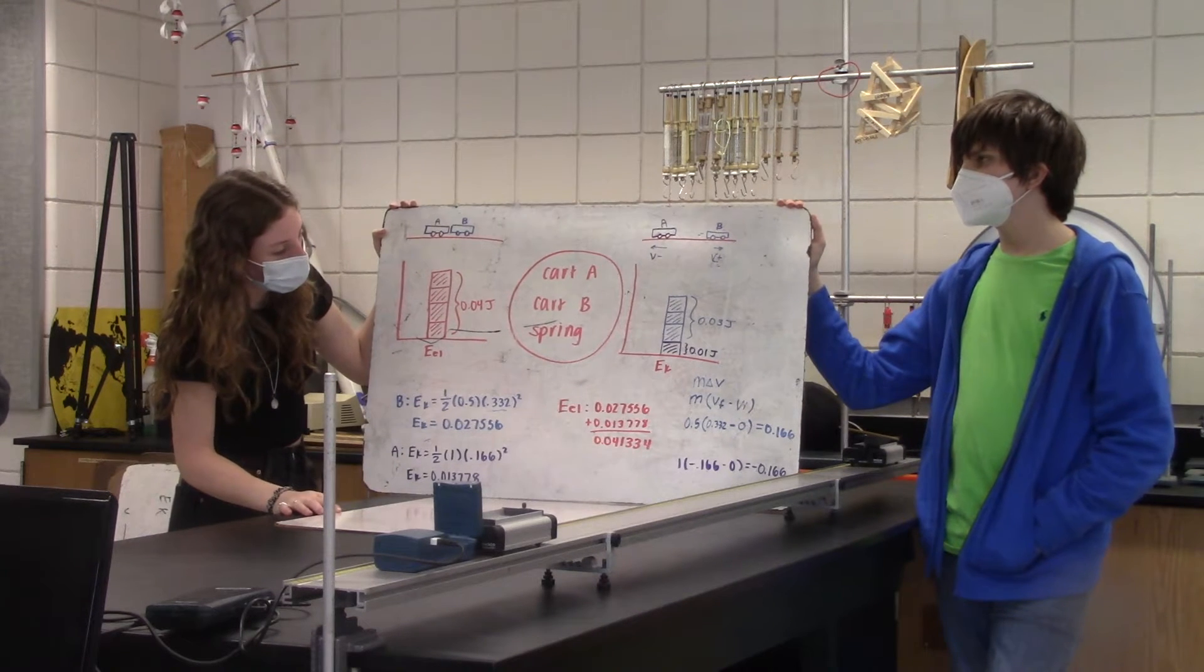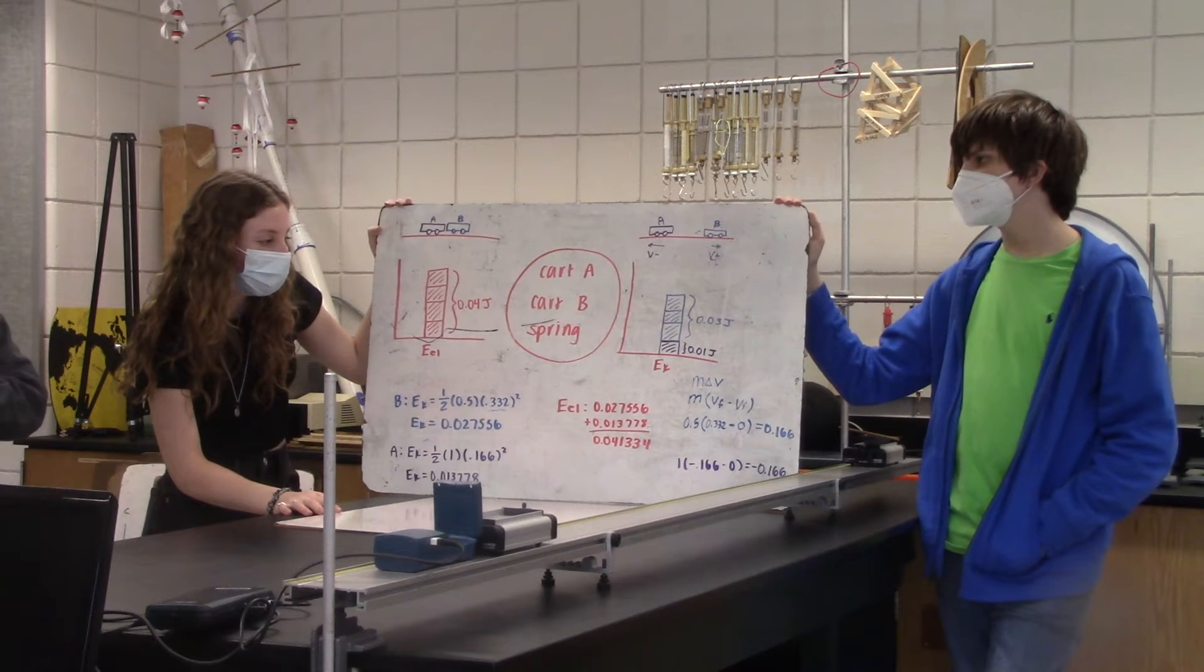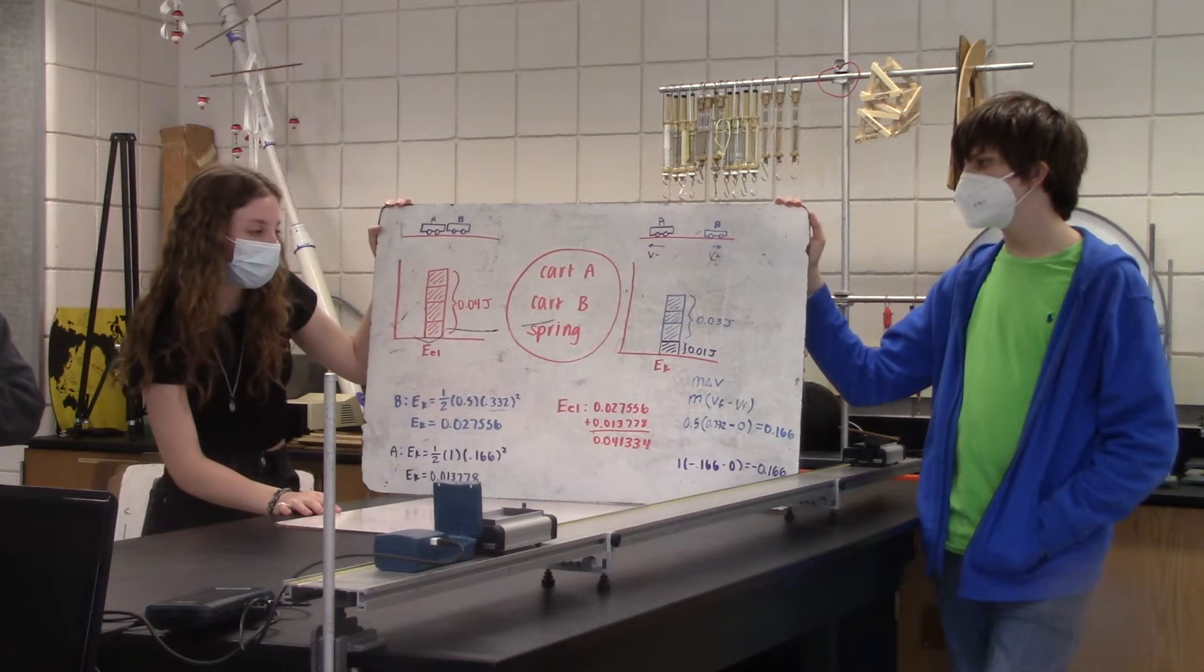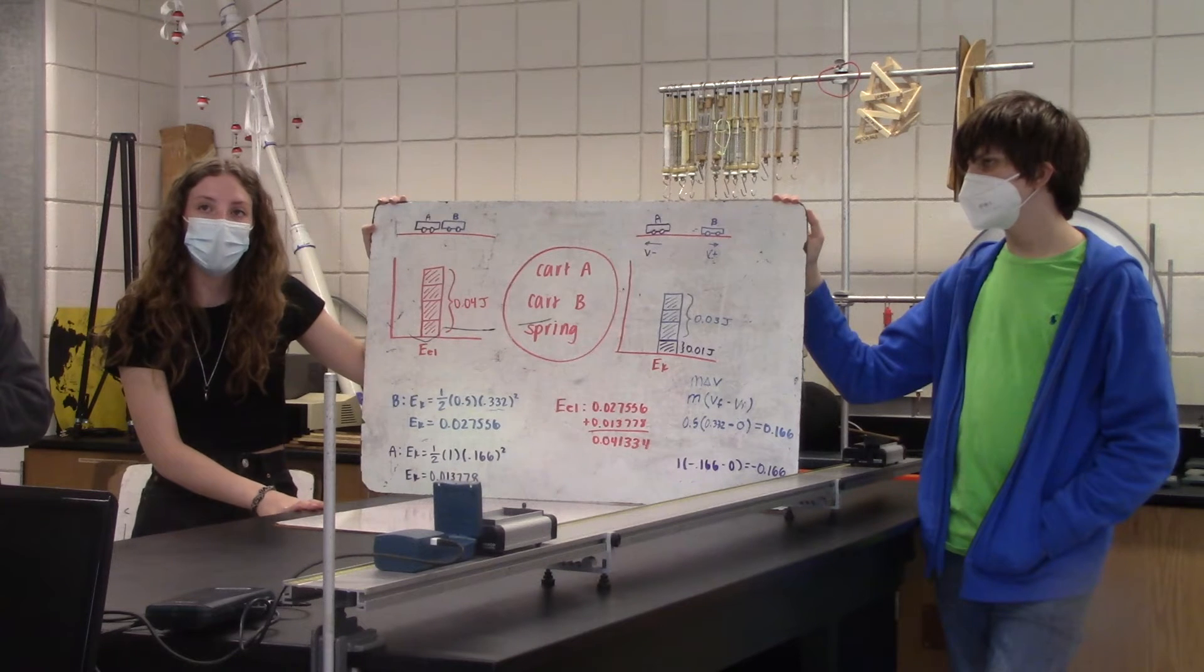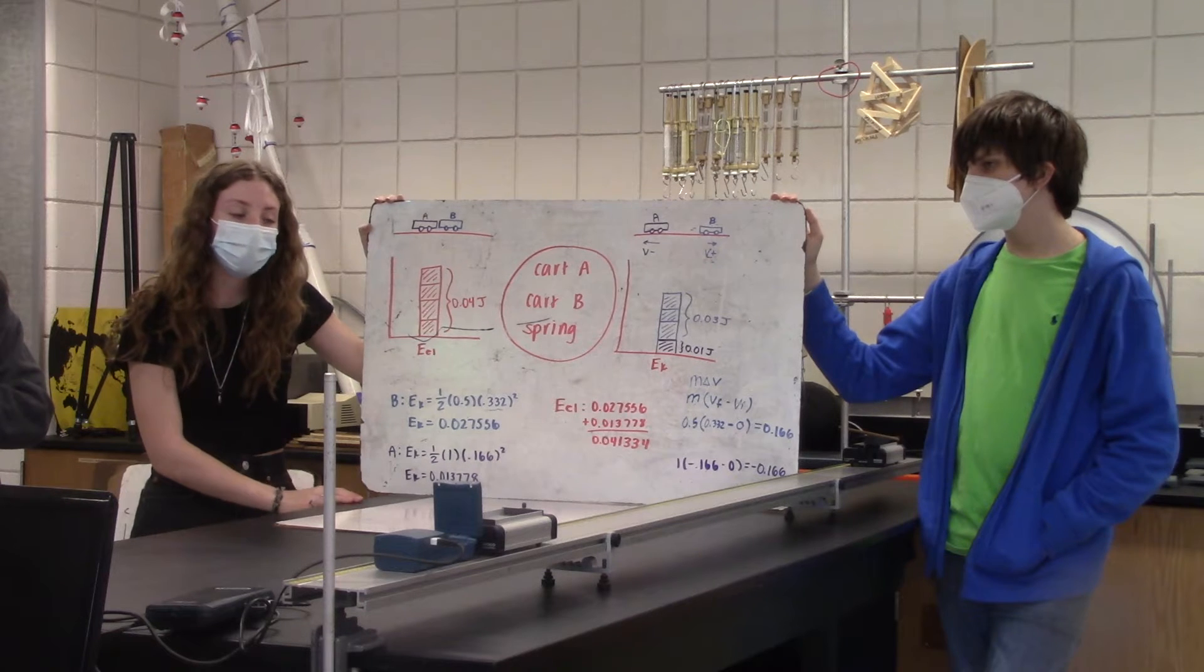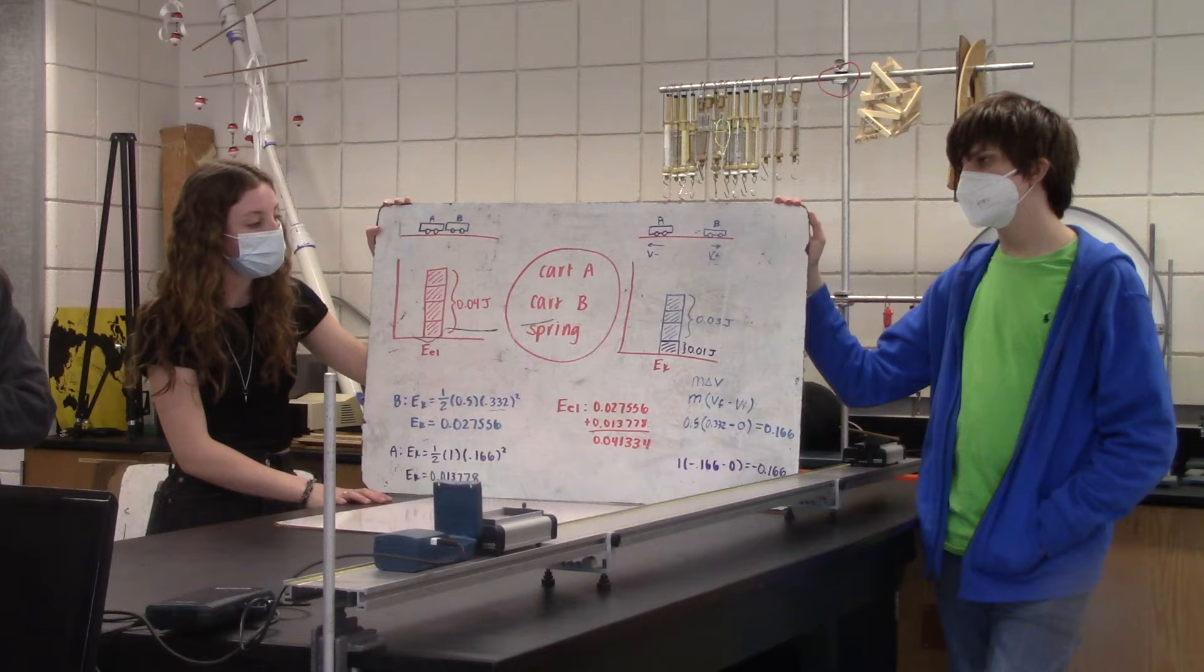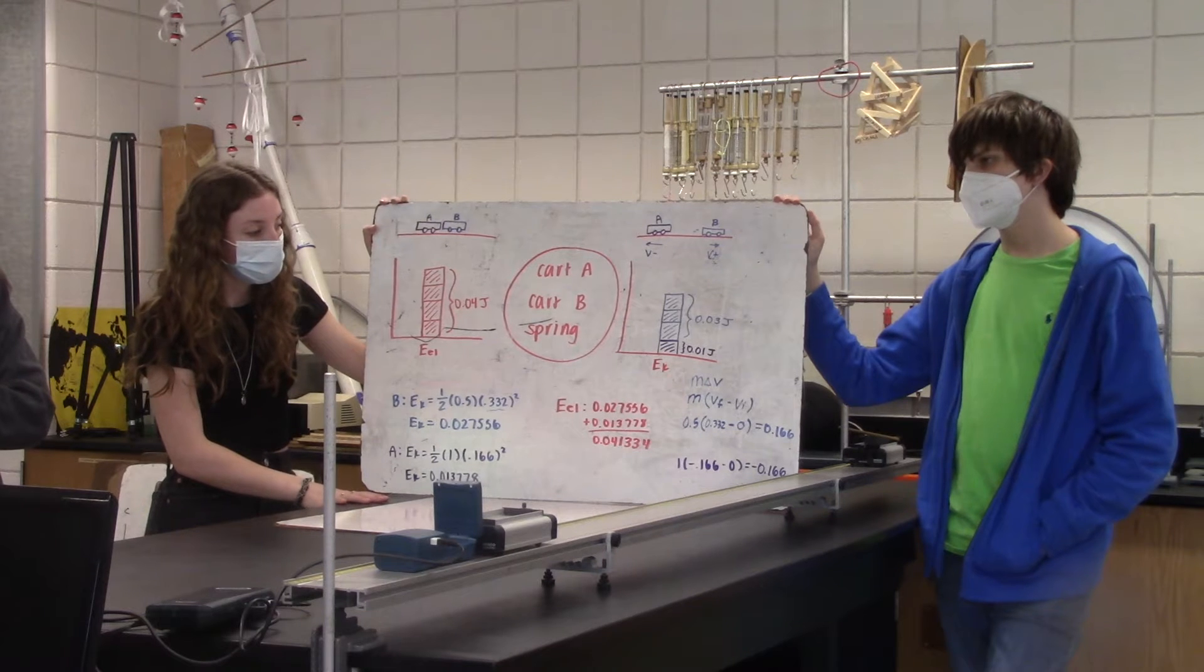And then to get the M delta V, we got the same for each cart, but one was negative and one was positive. So you're saying the M delta V for cart B was positive 0.166 and for cart A was negative 0.166. Yes.